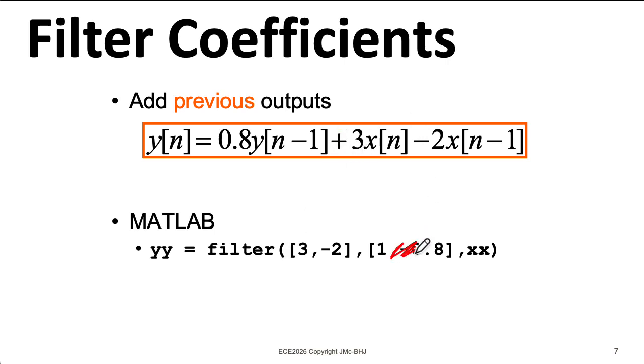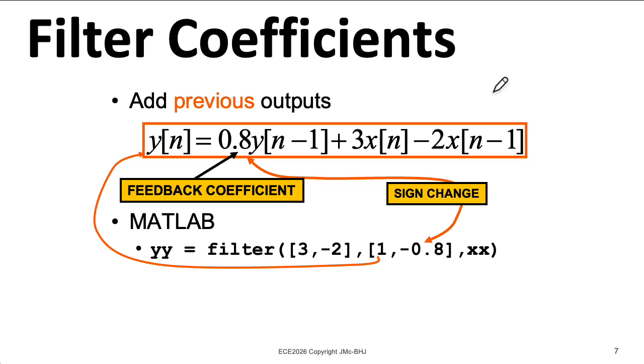Now, if I get rid of this minus 0.8 here, that gets rid of this term. And we can see this is the form we previously introduced for implementing an FIR filter using the filter function. Notice that when we included this feedback coefficient of 0.8, we actually changed the sign.